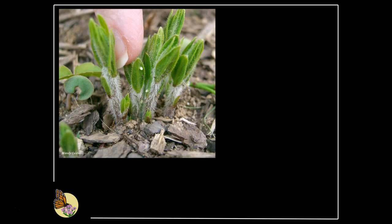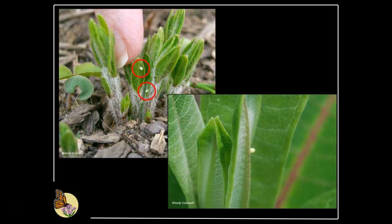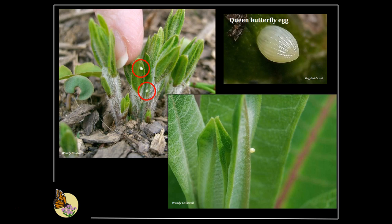Sometimes multiple eggs are laid on a leaf or a plant, so it is important to look at the entire plant when monitoring. Turning the leaf sideways can help view the characteristic pointed tip of the egg more easily. Note that the eggs of the queen butterfly, which occurs in the southwestern U.S., Florida, and northern half of Mexico, are identical in appearance to monarch eggs. Any time you see something that looks like a monarch egg, record it as such. However, if you see a queen butterfly adult or queen larvae in your sampling plot, record that in the notes section of your data sheet, so researchers can analyze your monarch egg data appropriately.